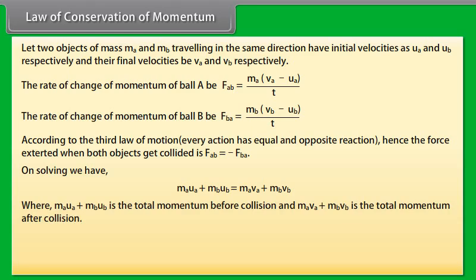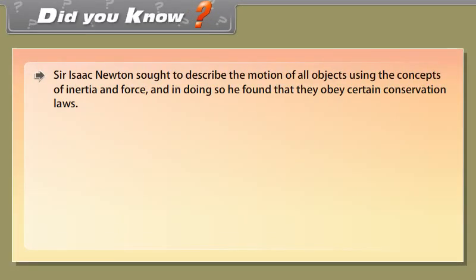Where MA UA plus MB UB is the total momentum before collision, and MA VA plus MB VB is the total momentum after collision. The sum of the momentum of the two objects before collision is equal to the sum of the momentum after collision when no external unbalanced force acts on it. Momenta is the plural form of momentum.